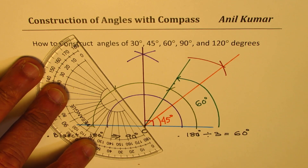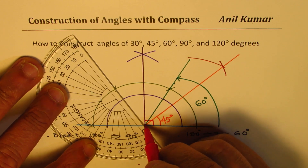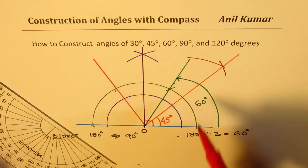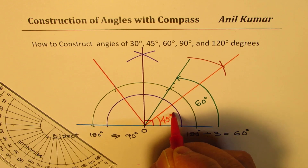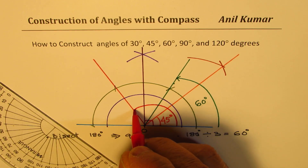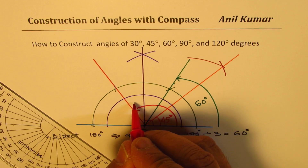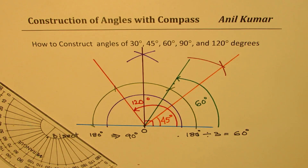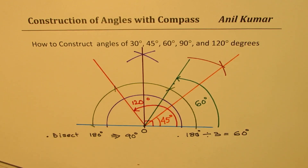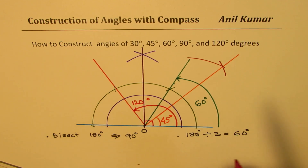Joining the second division point to O gives 120 degrees — that's two times 60 degrees. The third 60 gives us back 180 degrees. That is how we get 60 degrees and 120 degrees.